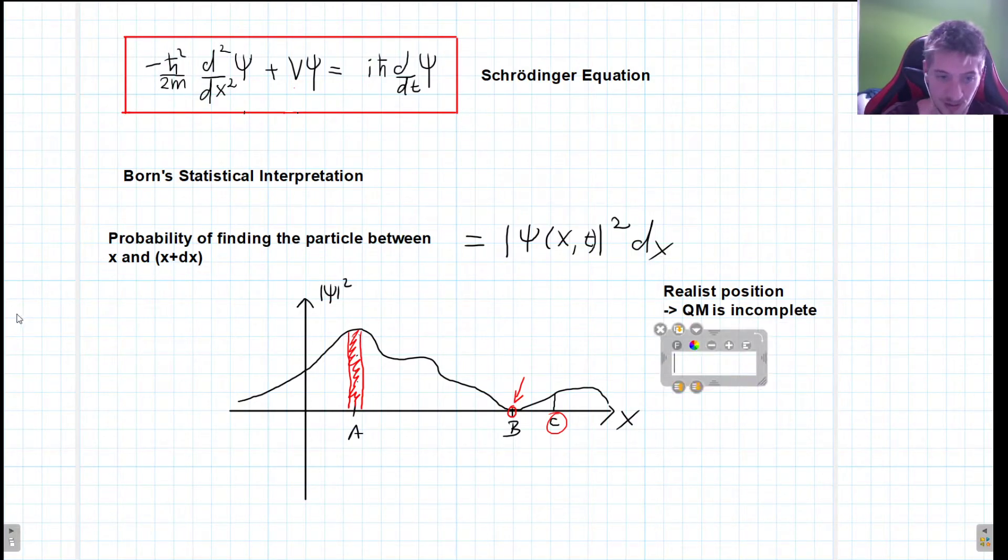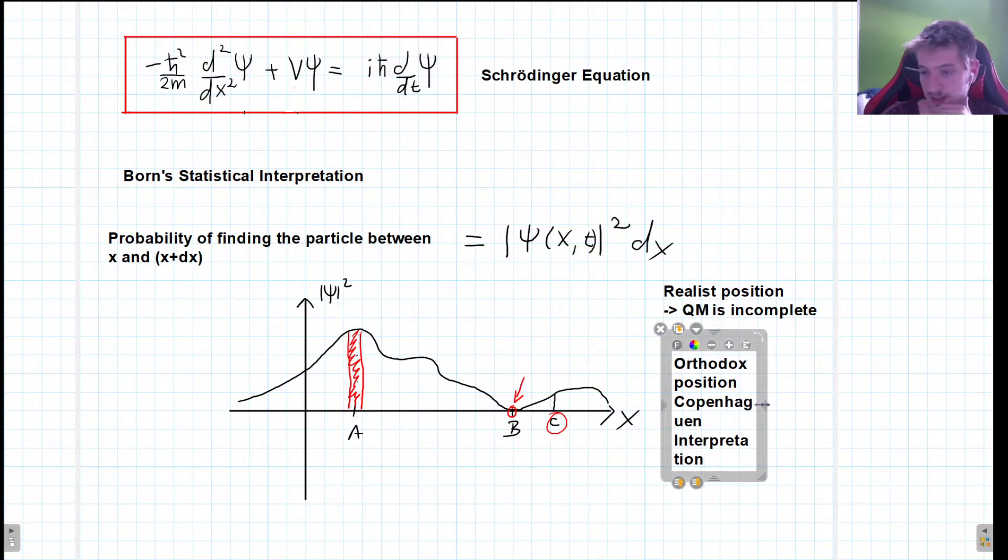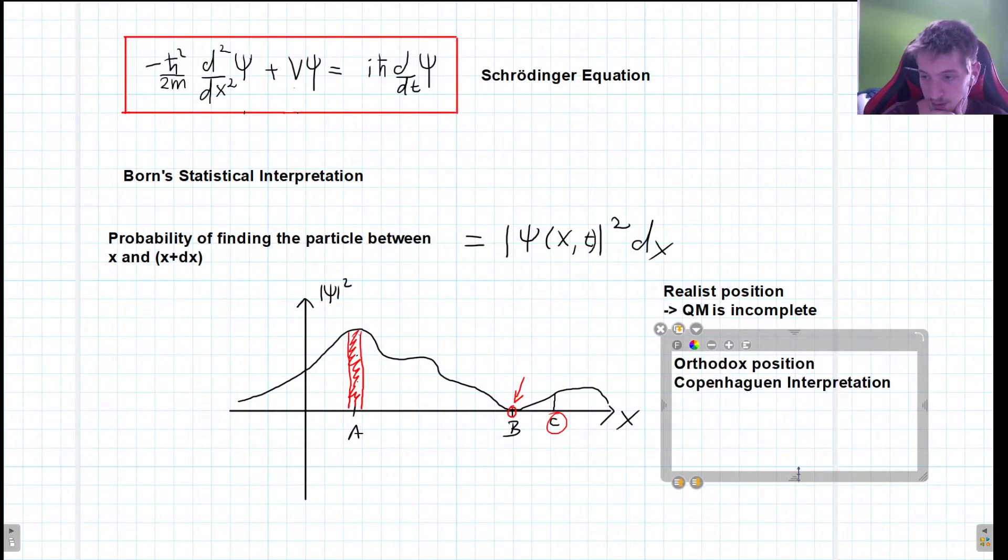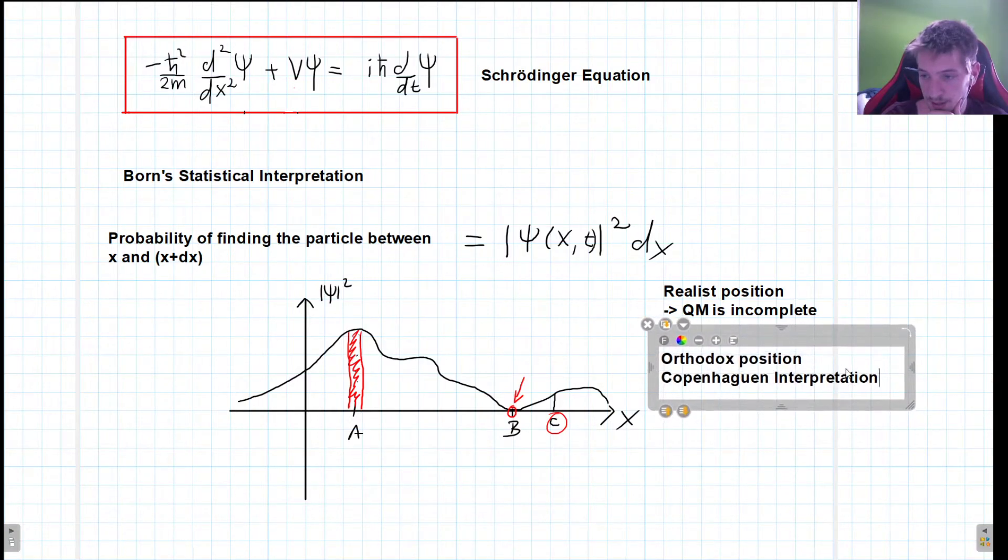Now the second one is the orthodox position and it's also called the Copenhagen interpretation. This is by far the most accepted position. And what it claims is that the particle wasn't really anywhere before we conducted our experiment.